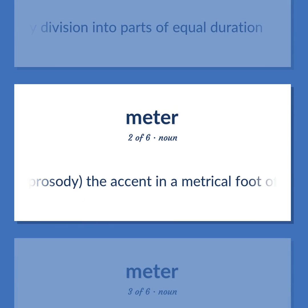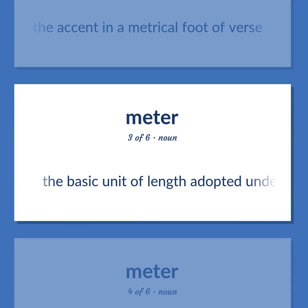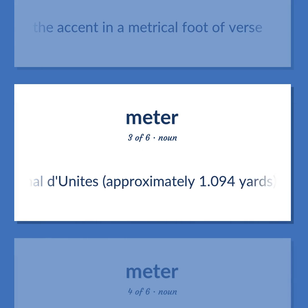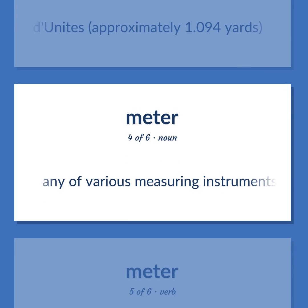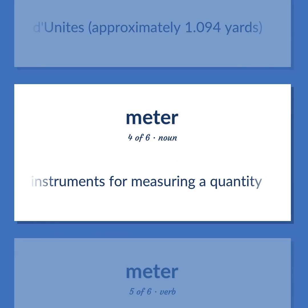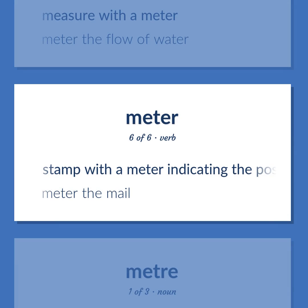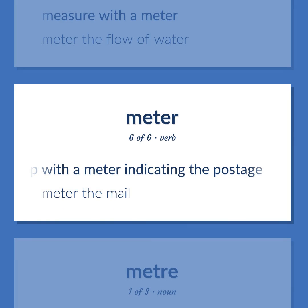METER: Prosody — the accent in a metrical foot of verse. The basic unit of length adopted under the Système International d'Unités, approximately 1.094 yards. Any of various measuring instruments for measuring a quantity. Measure with a meter — meter the flow of water. Stamp with a meter indicating the postage — meter the mail.